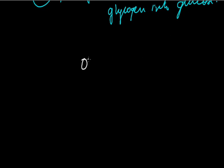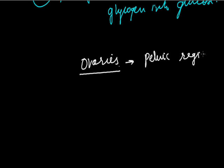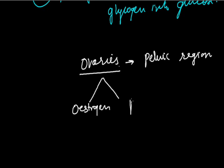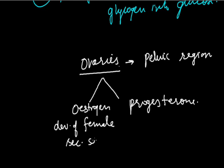The ovaries are two in number, present in females only, situated in the pelvic region of the lower abdomen. The hormones secreted by the ovaries are estrogen and progesterone. Estrogen affects the development of female secondary sex characters. Progesterone prepares the uterus for receiving the embryo and is responsible for maintenance of pregnancy, so it is called the pregnancy hormone.